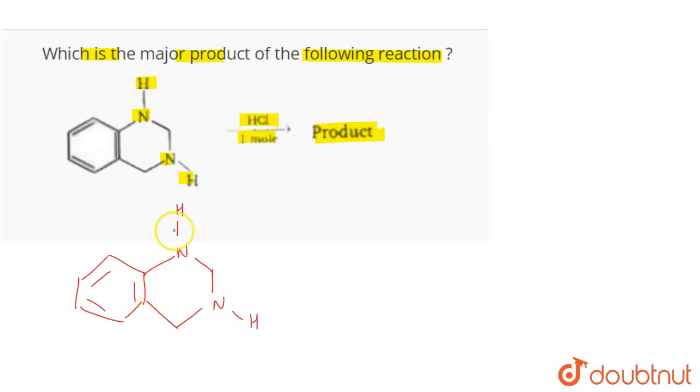If you talk about the lone pair of nitrogen atoms, there's one lone pair on nitrogen atom here and one lone pair on nitrogen atom here. But the lone pair which is present here will be involved in resonance. So basically this is a delocalized lone pair of electron, which means that this electron pair